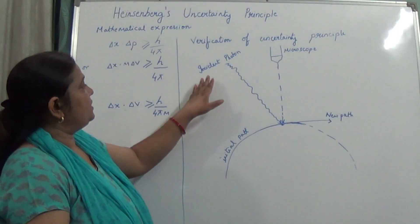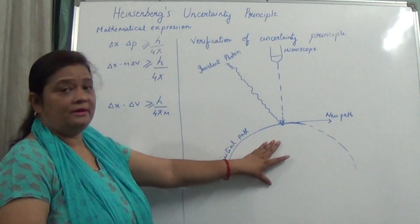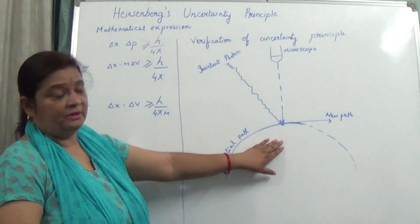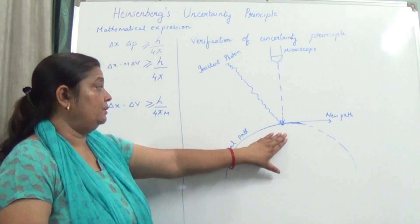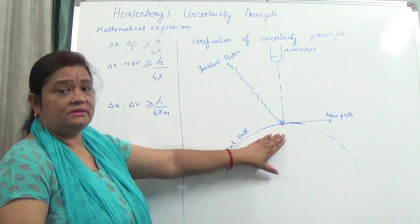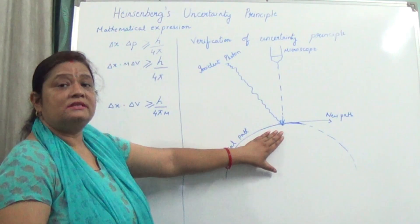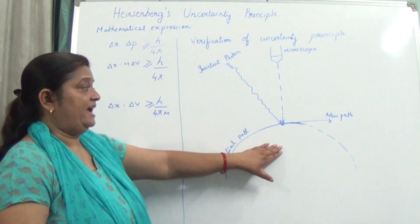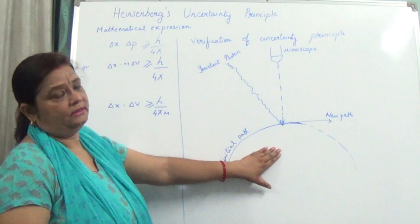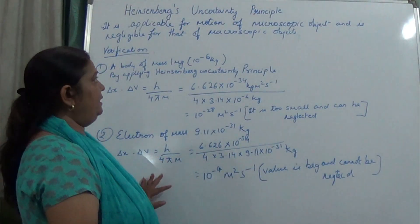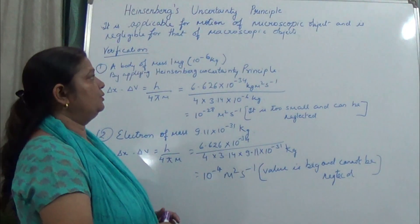This striking photon makes a large difference in the position and velocity of a microscopic particle like an electron. When it strikes the electron, both the position and the velocity are disturbed greatly. As a result, the electron gets displaced to a very great extent and its position and momentum cannot be determined simultaneously. So we have seen that position and velocity cannot be determined simultaneously in the case of microscopic objects.